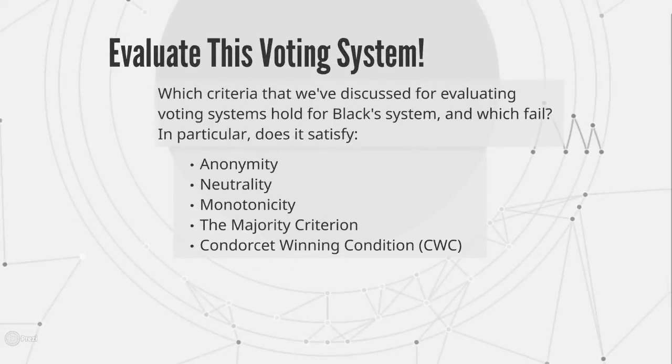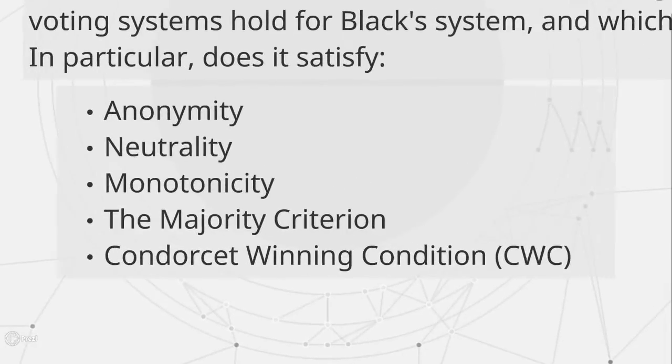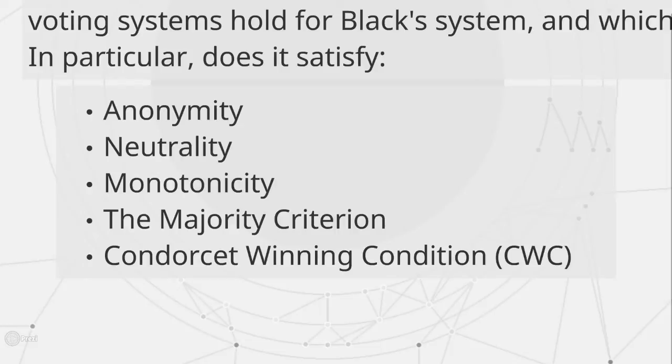So this sounds like it might be a really good system. Let's look through five of the major criteria that we've looked at before and decide which Black's system satisfies and which it fails. Anonymity is the idea that if any pair of candidates swap ballots, it shouldn't change the outcome. Neutrality says that if any two candidates are swapped in order on every person's ballot, their positions in the final societal preference order should swap. Monotonicity says that if a voter ranks a candidate higher, this shouldn't adversely affect the candidate's ranking in the societal preference order. The majority criterion states that if a candidate wins more than 50% of the first place votes, they should win the election. And the Condorcet winning condition says that if there is a Condorcet winner, they should win the election.